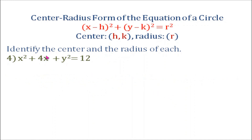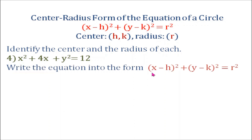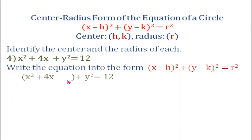Example number four: identify the center and the radius of x squared plus 4x plus y squared equals 12. Our equation is not written in center-radius form, so we are going to write it in the form the quantity x minus h squared plus the quantity y minus k squared equals r squared. We group together x squared and 4x, giving x squared plus 4x plus y squared equals 12. We then complete the square by finding one half of the coefficient of x and squaring it: one half of 4 is 2, and 2 squared is 4.